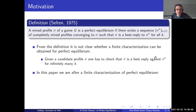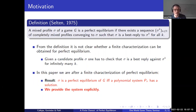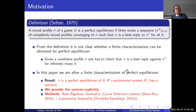We are after a finite characterization, and the type of result we are going to obtain is as follows: sigma is a perfect equilibrium of the game if and only if a polynomial system P(sigma) has a solution, and we are going to provide this system explicitly. In principle you'll be able to program this system, check whether it has a solution, and if it does, sigma is guaranteed to be perfect.